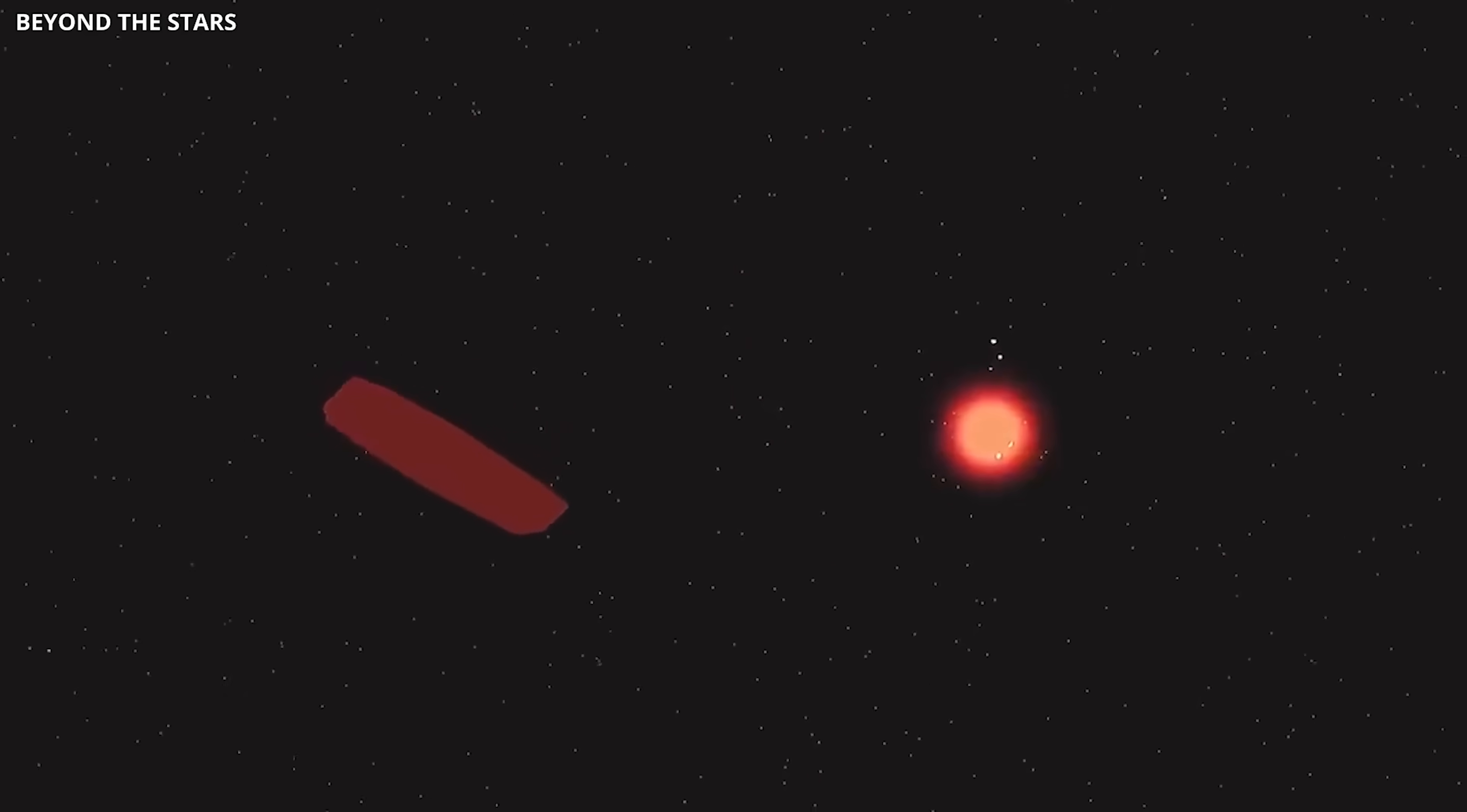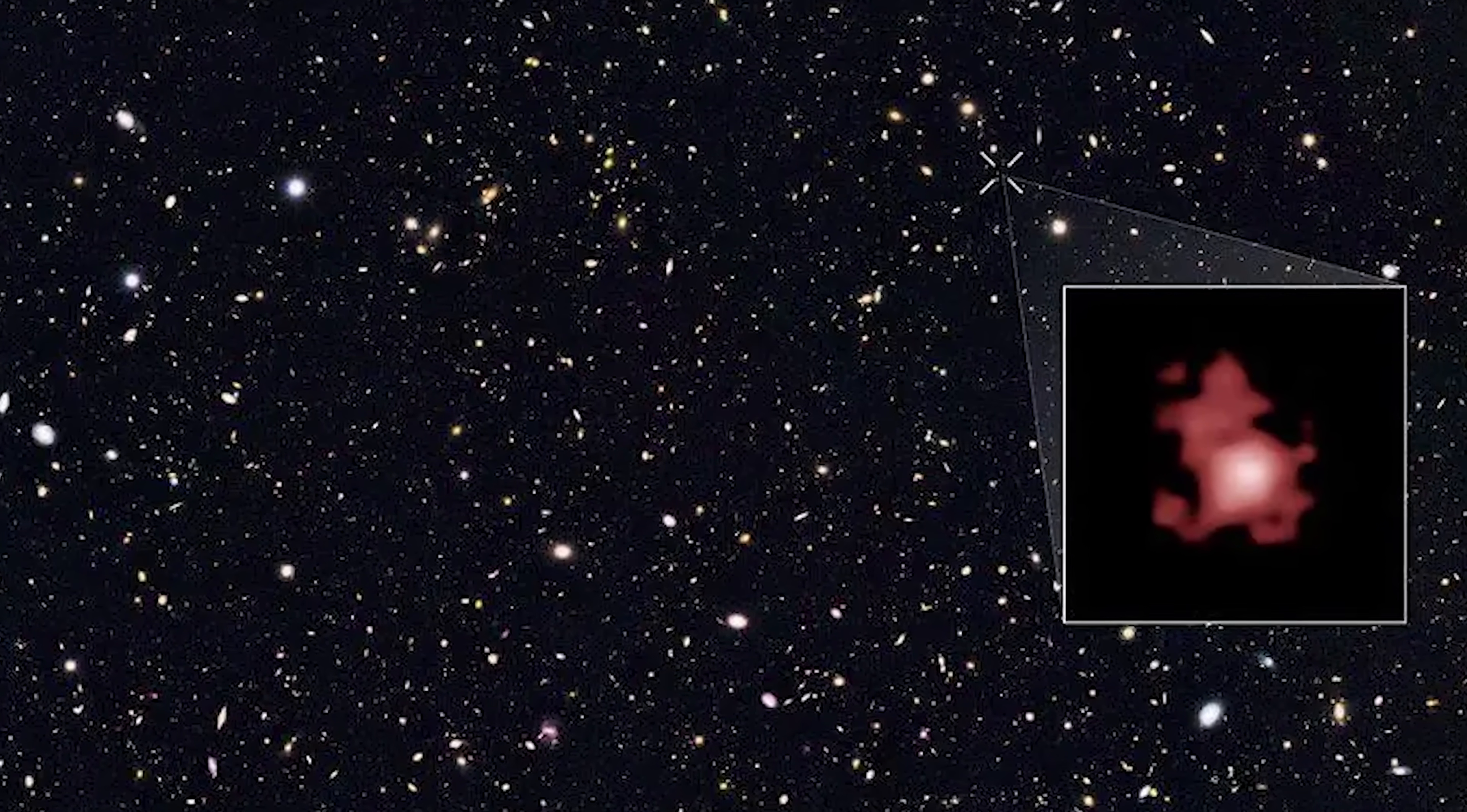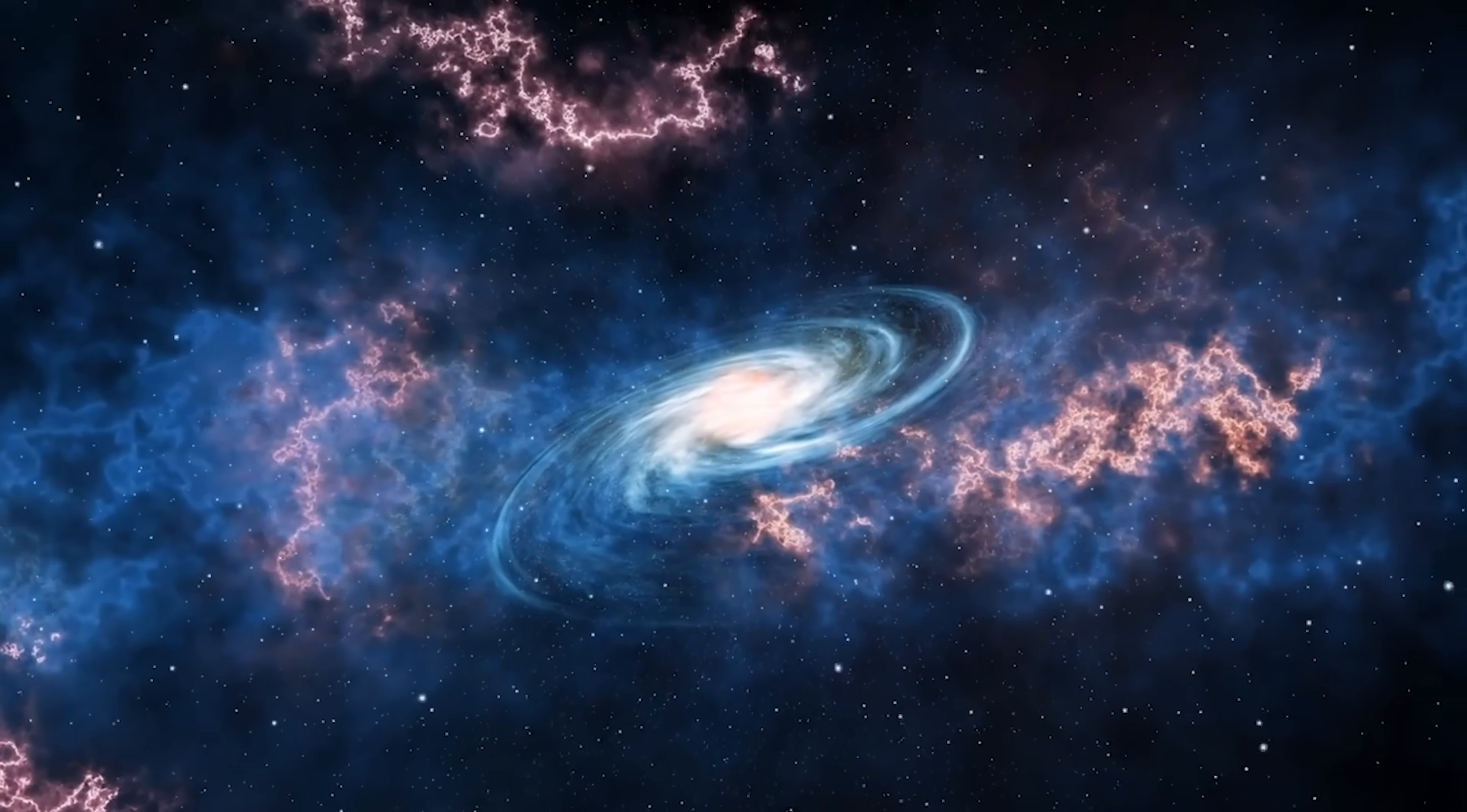Observed at a redshift of 3, the light from Sirius 2112 traveled almost 12 billion years before reaching Webb. This challenges the standard cosmological model, which predicts that the early universe's conditions should have prevented barred spirals from forming. Even advanced computer simulations struggled to reproduce such systems at that epoch.